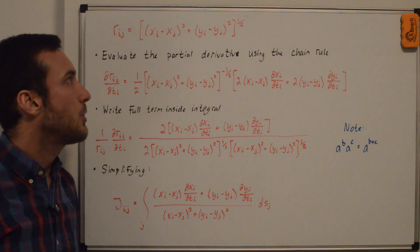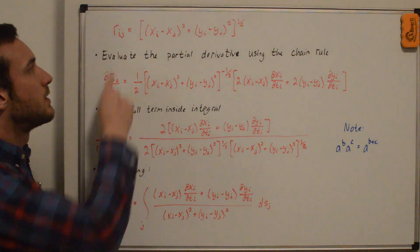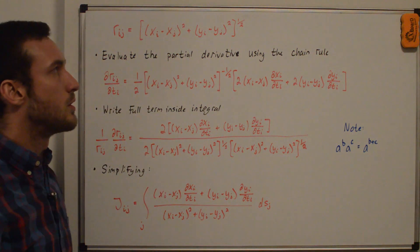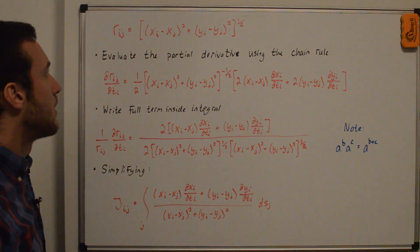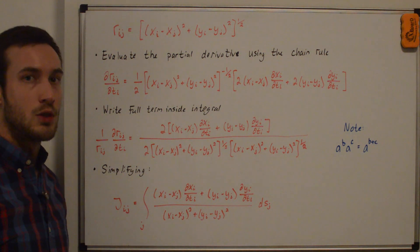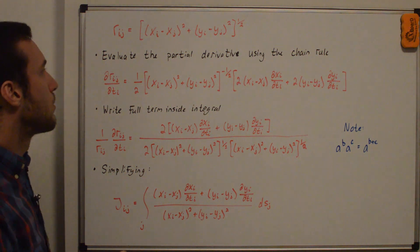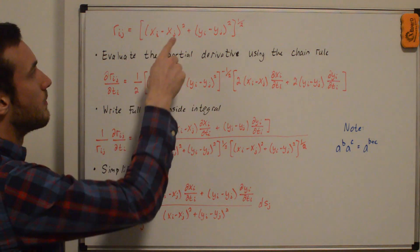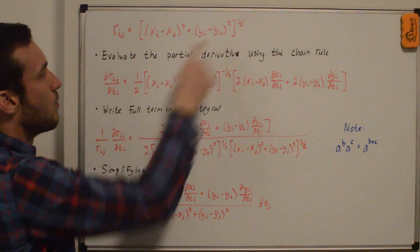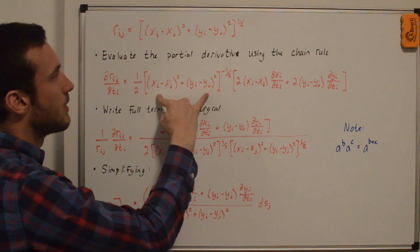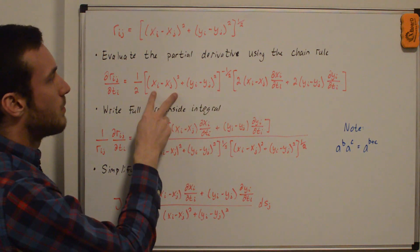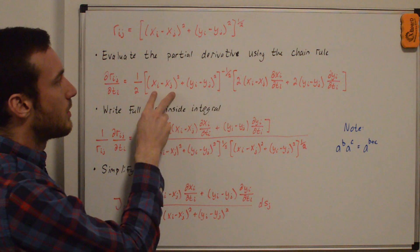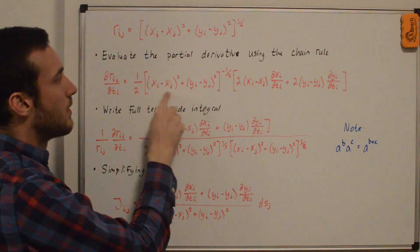So from my panel method geometry video, we know that rij is equal to this expression up here, which is just the distance between point xi, yi and xj, yj. And so we'll evaluate the partial derivative using the chain rule. And this partial derivative is from that natural log derivative that we took on the previous whiteboard. So we're just taking the partial derivative of this with respect to ti. So we have one half, bring it down, keep the expression inside, and then subtract a power off. So we have negative one half. Then we'll start with this term here using the chain rule. So we have two times this term.